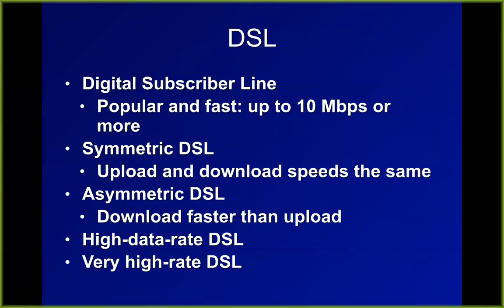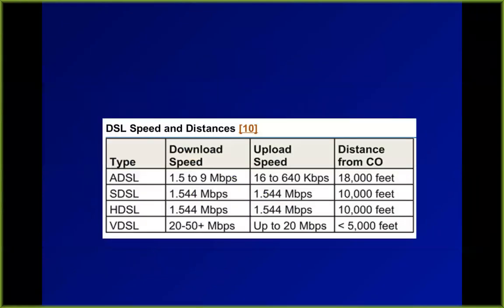There are many versions of DSL with different speeds, but the main determinant of speed is how close you are to a main telephone switching station. DSL can only go through something like 10,000 or 18,000 feet of copper wire before the signal degrades so much that you don't get any significant speed. So it's really only useful for people who live in cities near major switching stations.